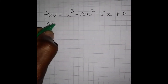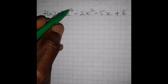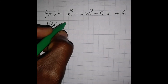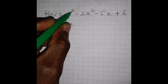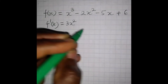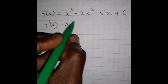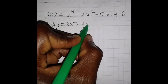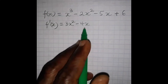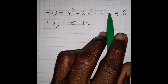So f prime of x is equal to — as you already know, this power here, 3, must multiply the coefficient. The coefficient here is 1, so it becomes 3x, and then you subtract 1 from the power, so 3 minus 1 gives us 2. When we come to this part, we multiply this power by this coefficient, which gives us minus 4, then subtract 1 from the power: 2 minus 1 gives us 1, so we have minus 4x to the power of 1.